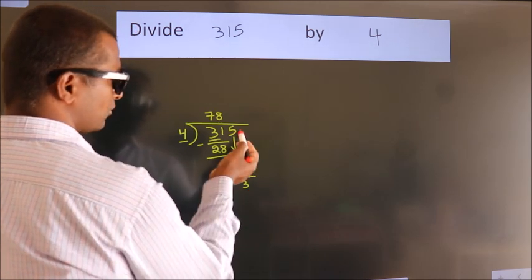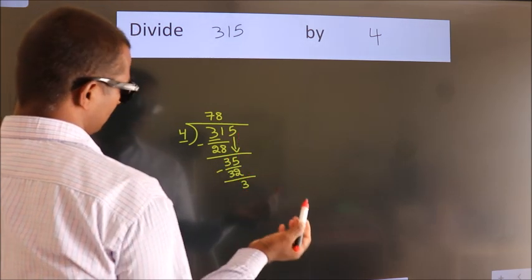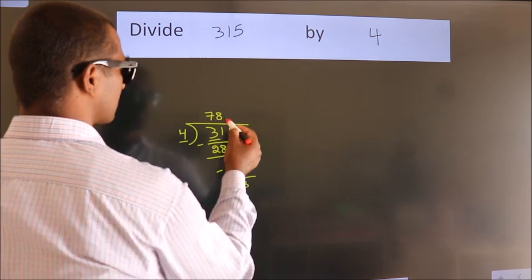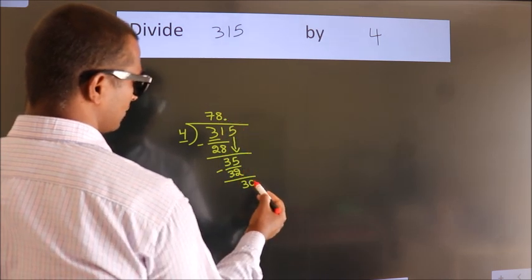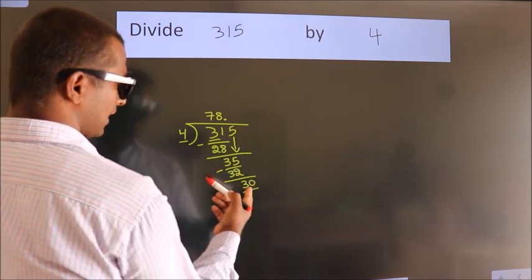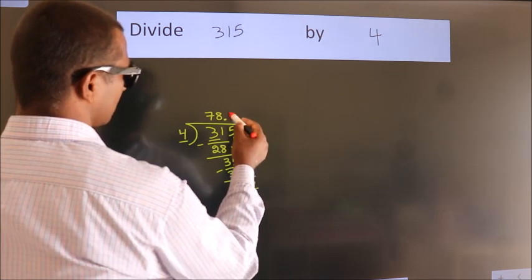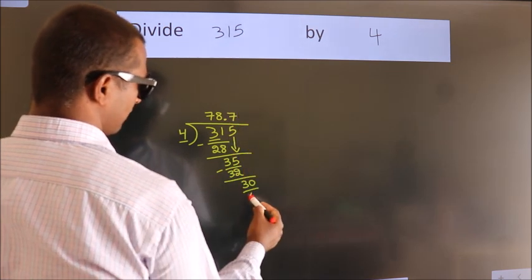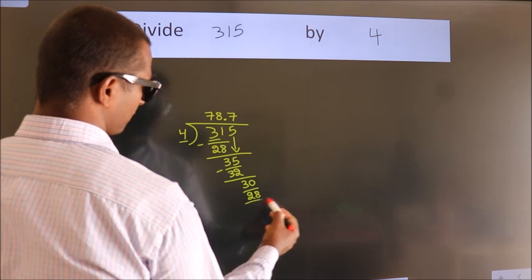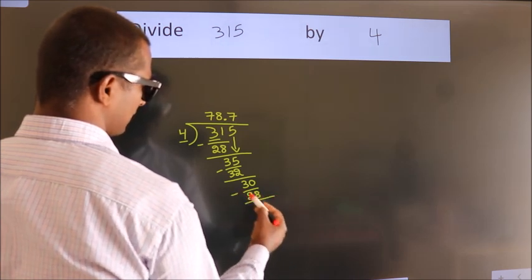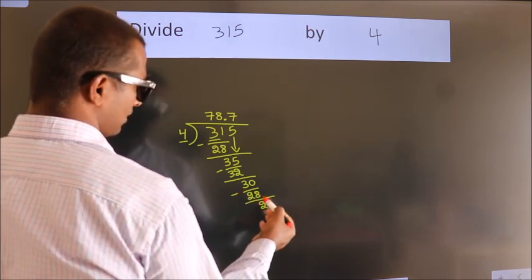After this, no more numbers to bring down. So what we do is, we put a dot and take 0, giving us 30. A number close to 30 in the 4 table is 4 times 7 equals 28. Now we subtract. We get 2.